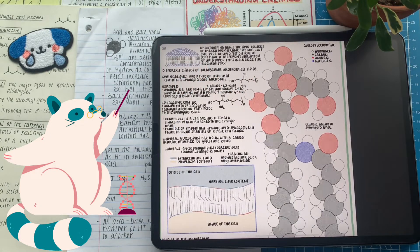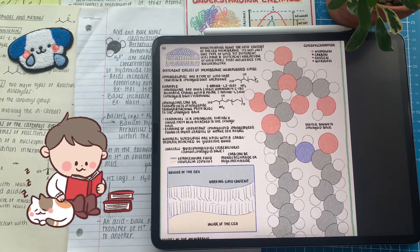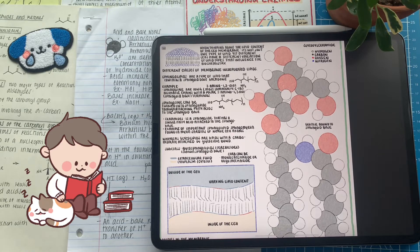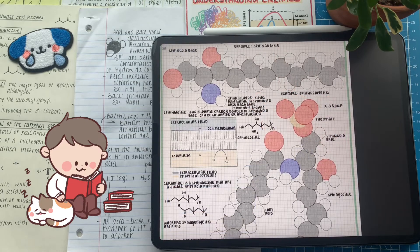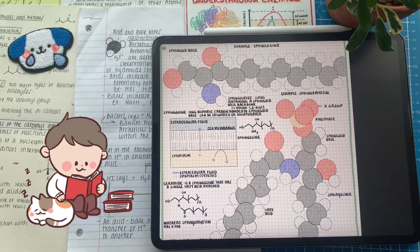Even though phospholipids are what we commonly know when we talk about the different lipids within the cell membrane, there's many different types. For example, there's also sphingolipids. Sphingolipids are a type of lipid that contain a sphingosine base backbone. That base is just 2-amino-1,3-diol, but that is the polar head of the specific lipid. There are different variations — we can attach a fatty acid and form different forms of sphingolipids, and they're really important.